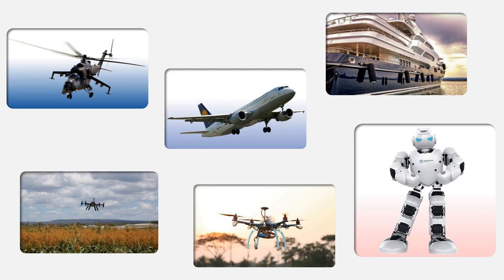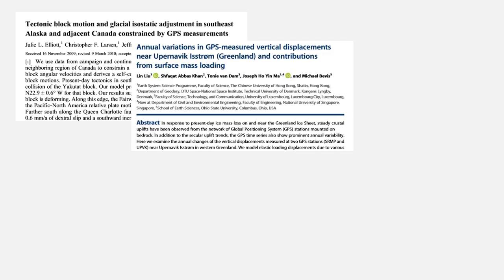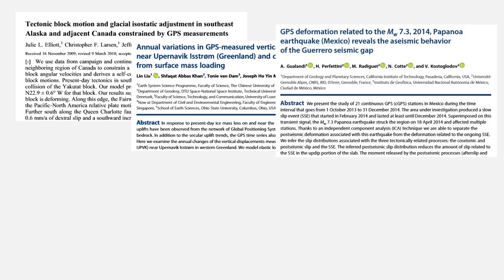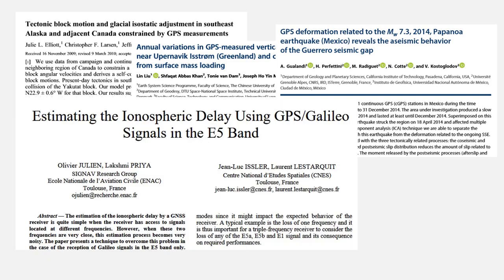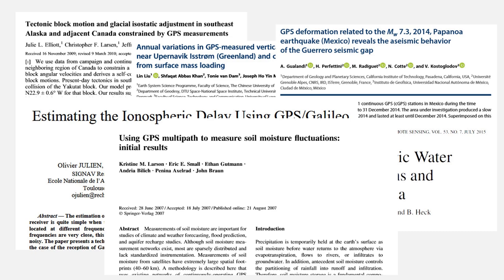Also, GNSS offer important contributions in many scientific research domains such as monitoring motions of tectonic plates, earth surface vertical displacement, estimating deformations caused by seismic and volcanic activity, monitoring the earth ionosphere and nitrosphere, estimating soil moisture and many others.